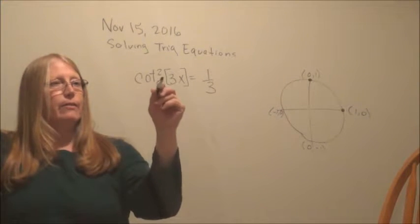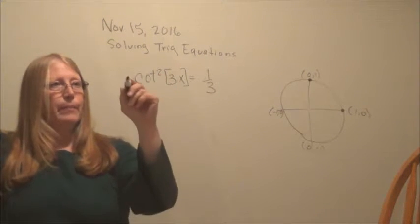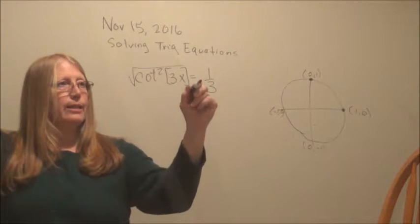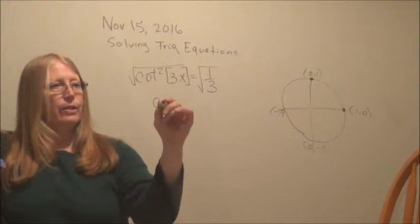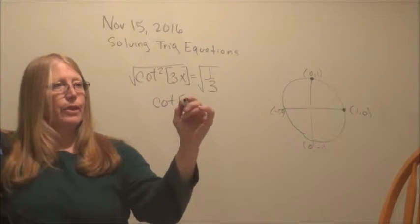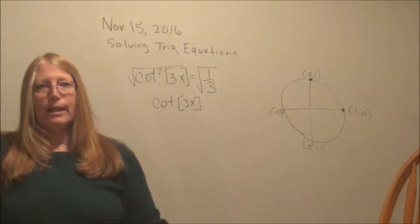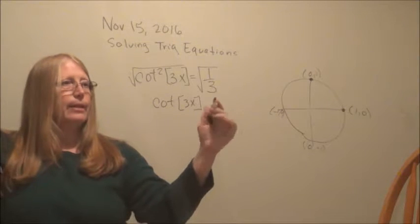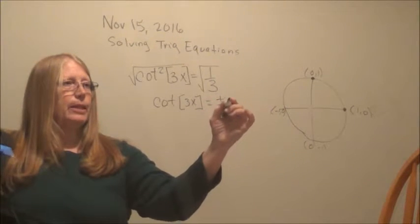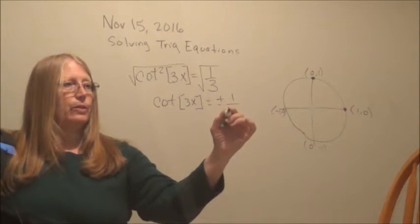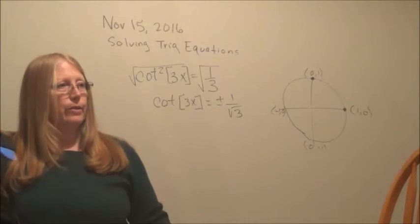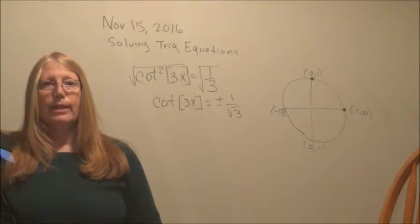So we're going to get rid of the cotangent squared by square rooting both sides. And that gives us cotangent of 3x. I put it in these brackets just to emphasize it has to stay together. And that created a plus or minus when I took the square root. I took the 1 out of the square root, because the square root of 1 is 1.